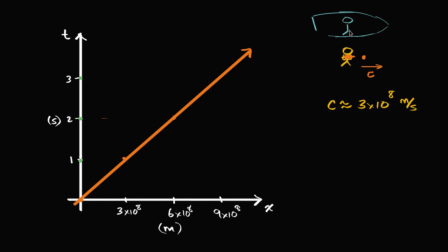In the spaceship, I have my friend. The spaceship is traveling with a pretty incredible velocity in the positive x direction. If this vector represents the speed of light, then let's say that this spaceship is moving with half the speed of light — which is still incredibly fast. The magnitude of the velocity is 0.5c.